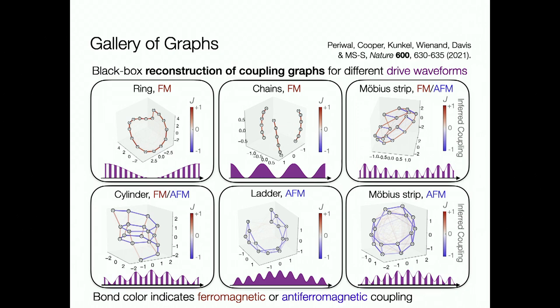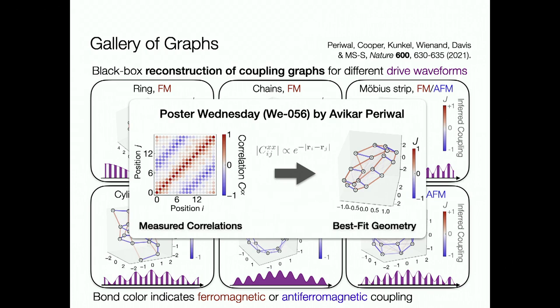We can engineer a ring with nearest-neighbor interactions and periodic boundary conditions, but we can also add additional frequency components to make a Möbius strip, a cylinder without the twist, or a ladder-like geometry—just by changing the waveform we apply with the light. These illustrations are reconstructions of the effective geometry directly based on measured correlations: points close together indicate sites that are interacting strongly and hence strongly correlated. For more details on reconstructing these pictures, see a poster on Wednesday by Avikar Parawal.